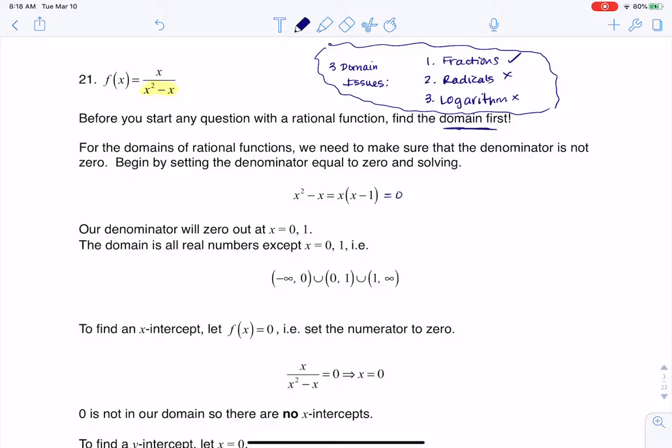I'm going to let my denominator equal zero. I get either that x is zero or x minus one is zero. That gives me two numbers to throw out of my domain, zero and one. So the domain is all real numbers except zero and one.